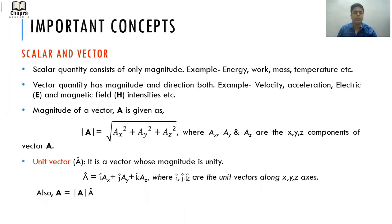Vector quantity has magnitude and direction both. Examples: velocity, acceleration, electric and magnetic field intensities E and H.